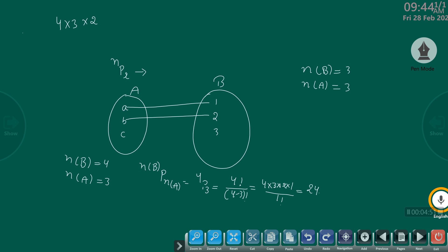That means the answer will be 3P3, and 3P3 equals 3 factorial upon (3 minus 3) factorial, which means 3 factorial upon 0 factorial. The answer is 6.